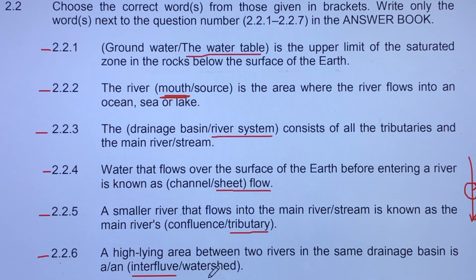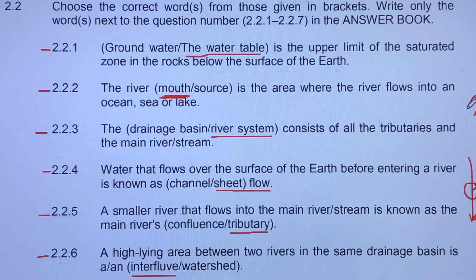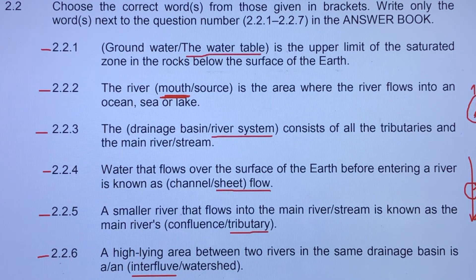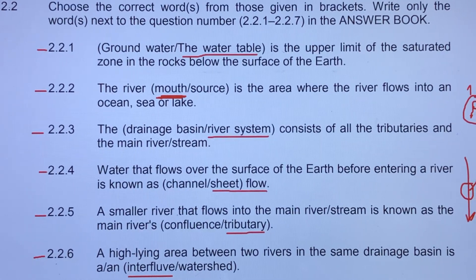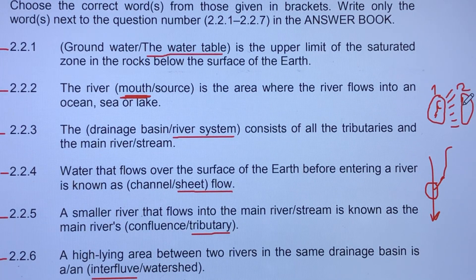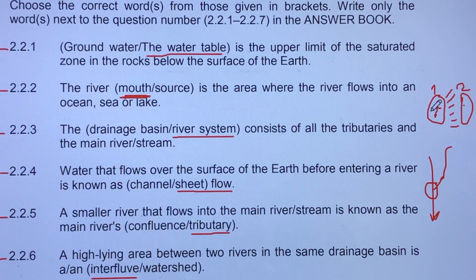Watershed is wrong here because a watershed is a high-lying area that divides two different drainage basins. For example: here is drainage basin one with its tributaries, and here is the high-lying area — represented by the stripes — which is the watershed, and drainage basin two is on the other side. So the watershed divides drainage basin one and drainage basin two.